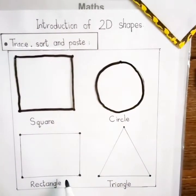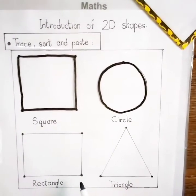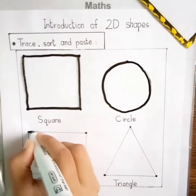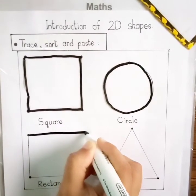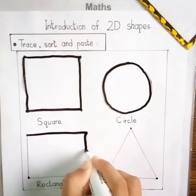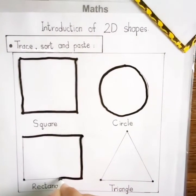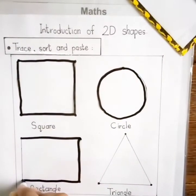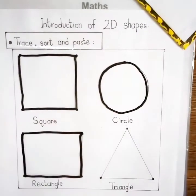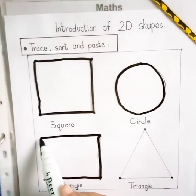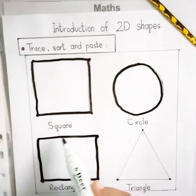Now, which shape is this? Rectangle. Rectangle has 2 sides equal. Let's draw a rectangle — join all 4 dots to make a rectangle. Rectangle has 4 corners and 4 sides.